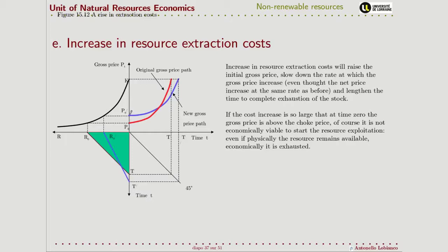How much the gross price increases depends on how much the extraction cost increases. If the extraction cost increases so much that the new gross price is above our choke price K, then the resource simply cannot be extracted, because a substitute technology is already cheaper. This is an example of the difference between a technically available resource — our initial stock — and an economically feasible resource. The resource is there, but it will not be economically feasible to even begin extracting it.